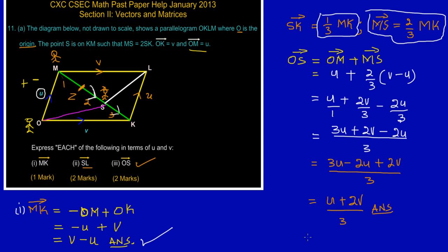But for some persons you may prefer writing it in another way. It's the same thing to divide by 3 is the same as multiplying by a third. So you could say it's one-third open bracket u plus 2v. Both expressions are the same thing.